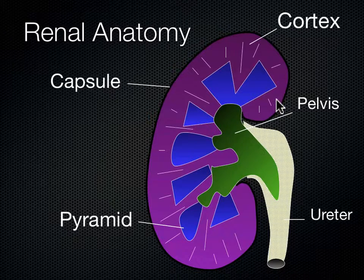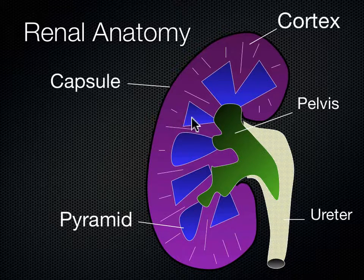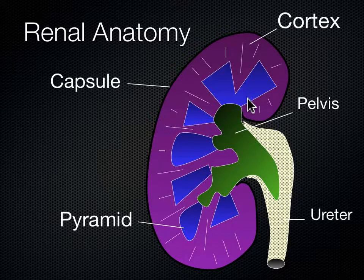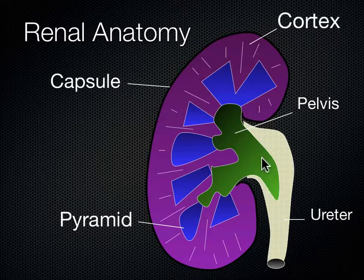This is a schematic diagram of the kidney. You can see the capsule structure out here, the cortex where all the nephrons are. They drain into these pyramid structures full of urine, and eventually coalesce into the renal pelvis, sometimes called the renal sinus, and then drain down the ureter into the bladder.